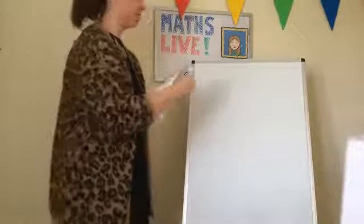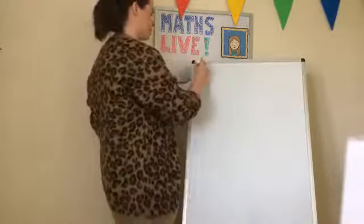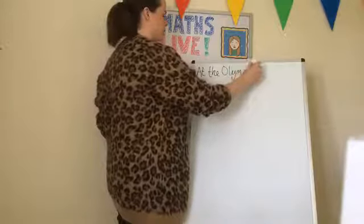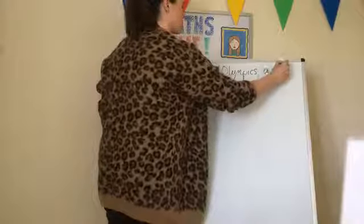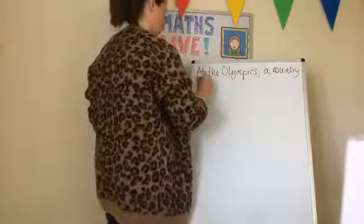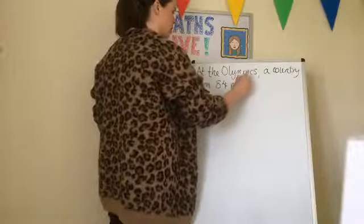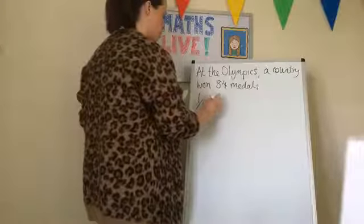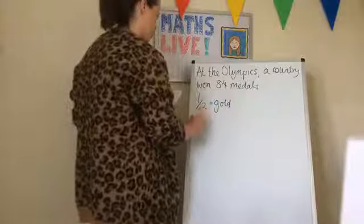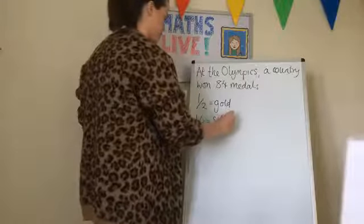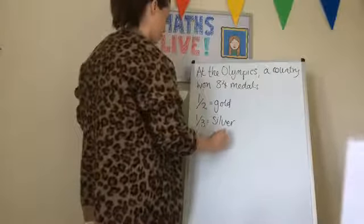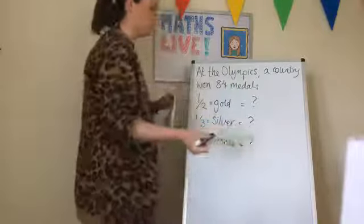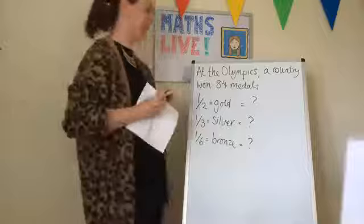At the Olympics — which aren't happening this year, which is sad — a country won 84 medals. Half of the medals were gold, a third of the medals were silver, and one-sixth of the medals were bronze. How many of each medal did they get?